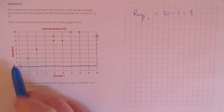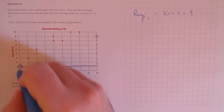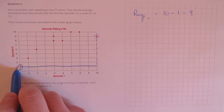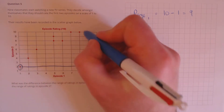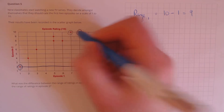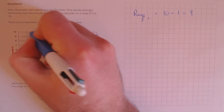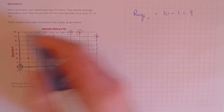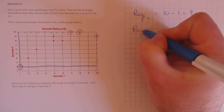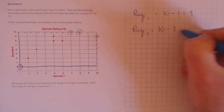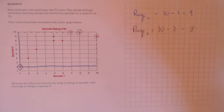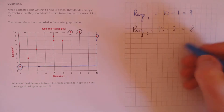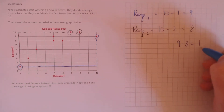For episode 2, the lowest data point has a ranking of 2 and the highest point is 10, so the range is 10 minus 2, which equals 8. We want the difference between these two ranges, so that's 9 take away 8, which equals 1.